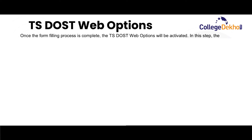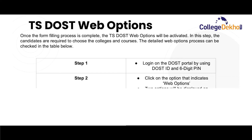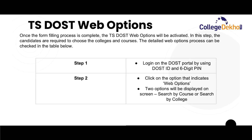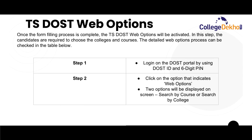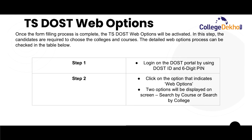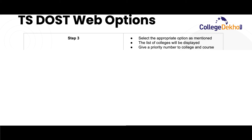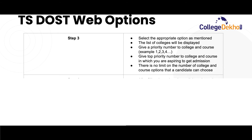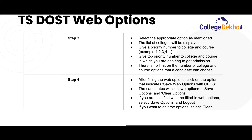TS DOST web options: once the form filling process is complete, the TS DOST web options will be activated. In this step, candidates are required to choose colleges and courses. Log in on the DOST portal using the same DOST ID and 6-digit PIN, then click on the option that indicates web options. Two options will be displayed: search by course or search by college. Select the appropriate option; the list of colleges will be displayed. Give a priority number to the colleges and courses — for example, 1, 2, 3, 4 — as per your preference. Give top priority to the colleges and courses in which you are most aspiring to get admission. Since there is no limit on the number of colleges and course options a candidate can choose, it is advisable to choose as many options as possible to increase chances of admission.